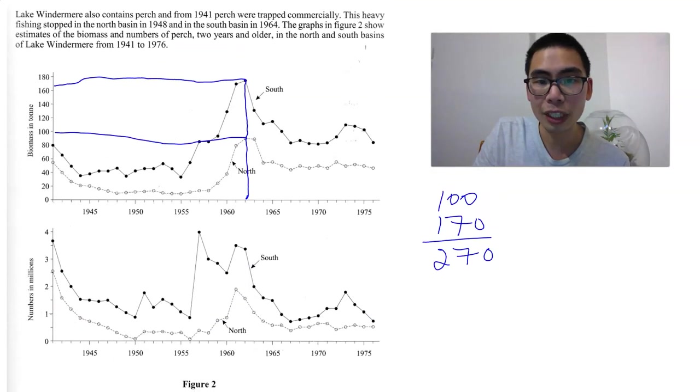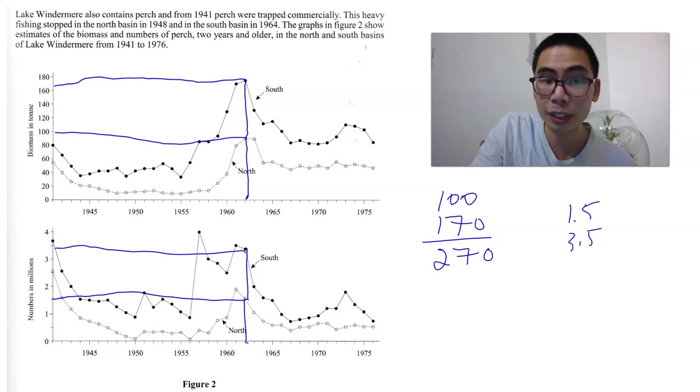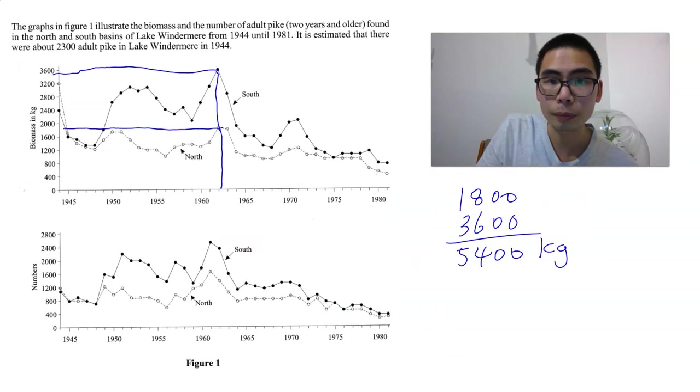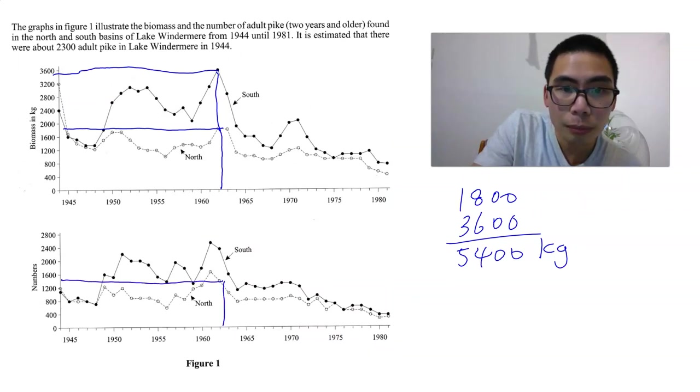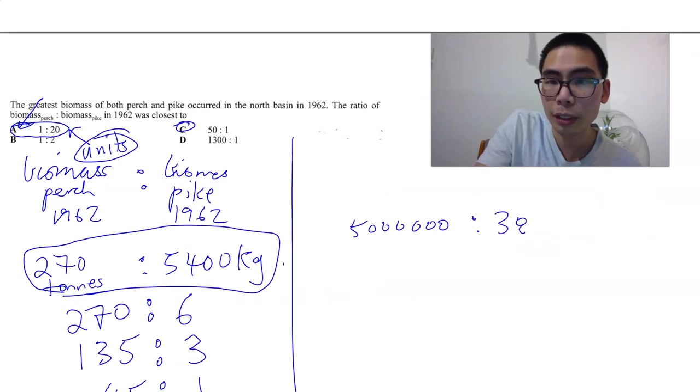Now, if we went back and instead of initially looking at the biomass of perch, we looked at the numbers by accident. What would have happened? 1962. Have a quick read. It's about 1.5 and 3.5. So 1.5 and 3.5. And you notice that the scale is in millions. So this is 5 million. So instead we have 5 million. That's 6 zeros. And let's go up to have a look at the number of pike. 1962. That looks like about 1,400. Go up again to the south. That looks like about 2,400. So it's about 3,800.